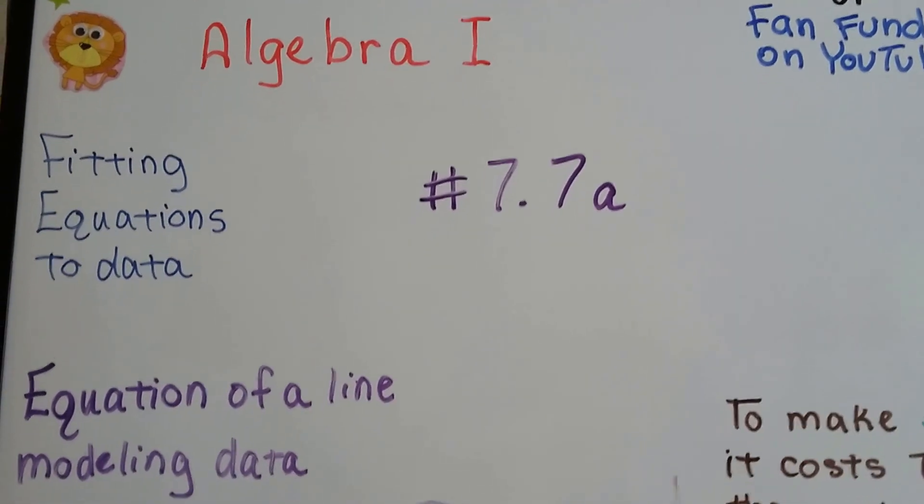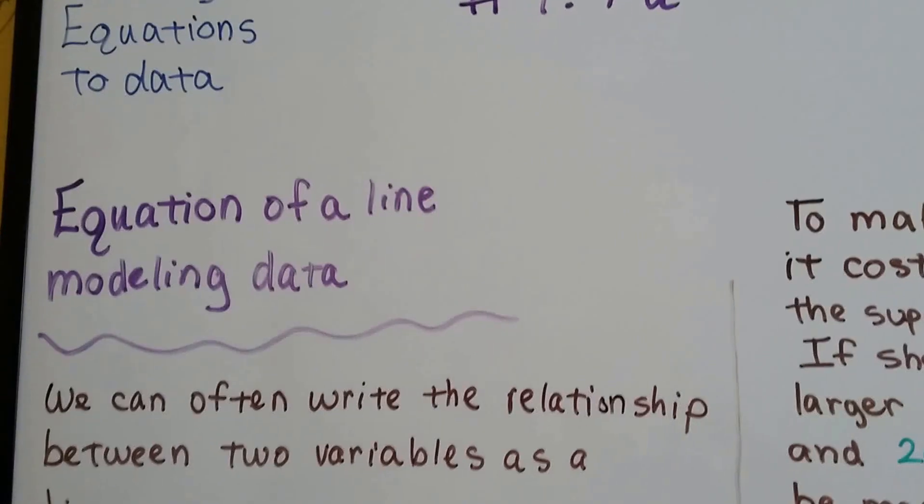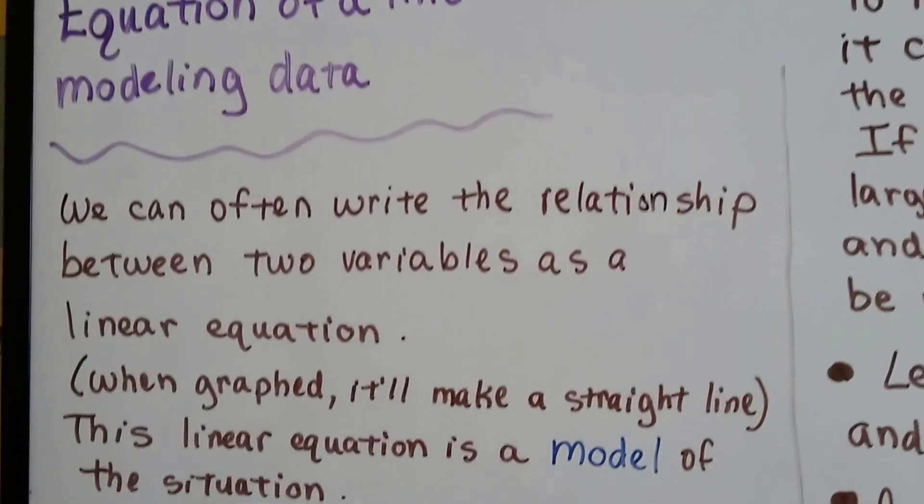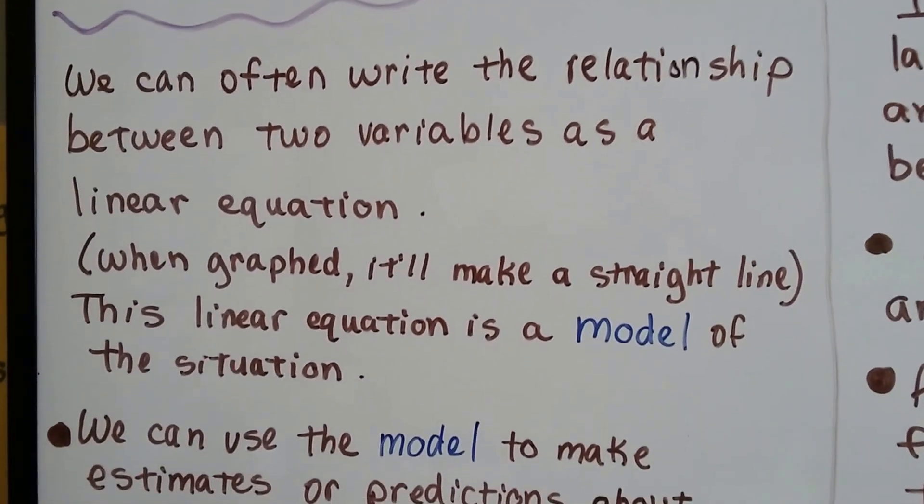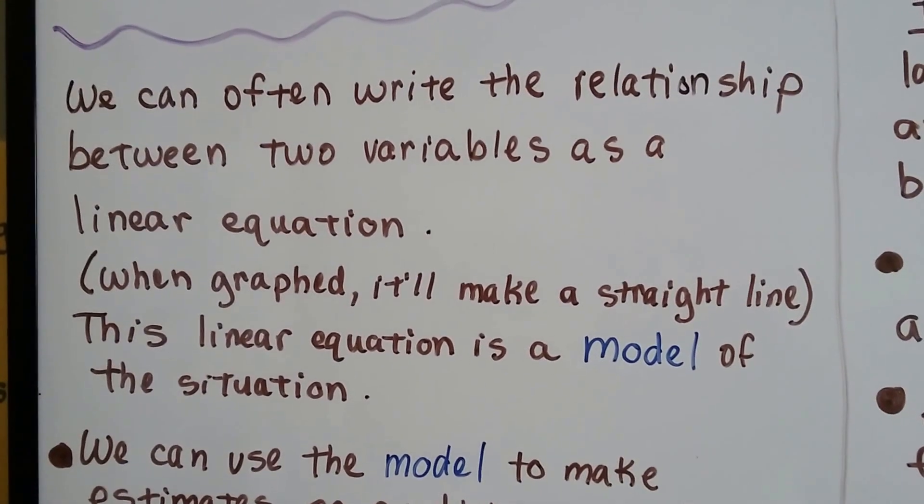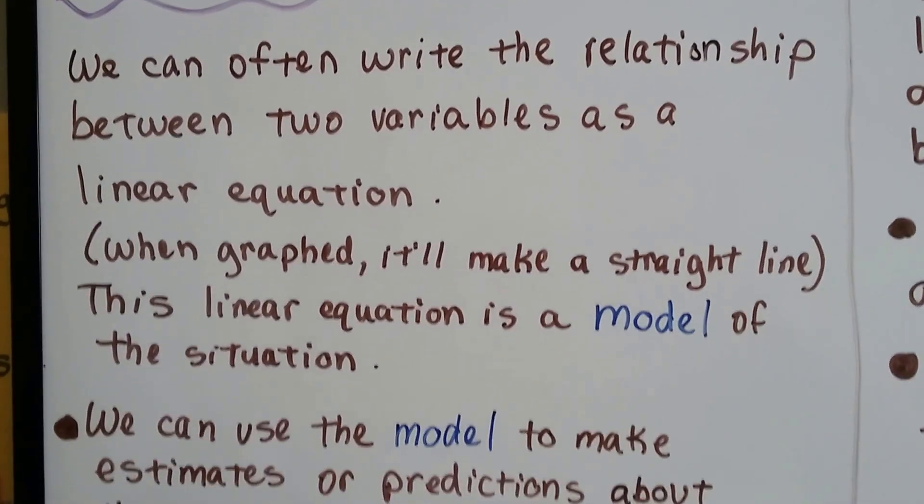We're at 7.7a now in Algebra 1, equation of a line modeling data. We can often write the relationship between two variables as a linear equation. When it's graphed, it'll make a straight line. That's a linear equation.